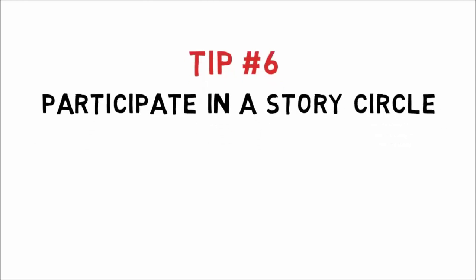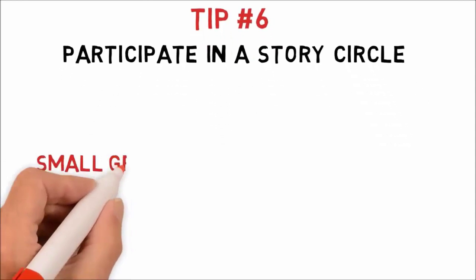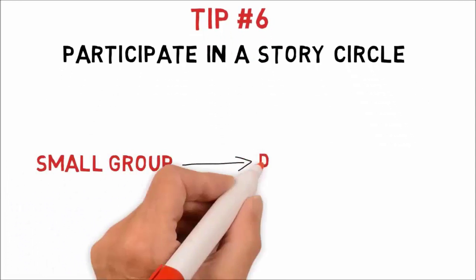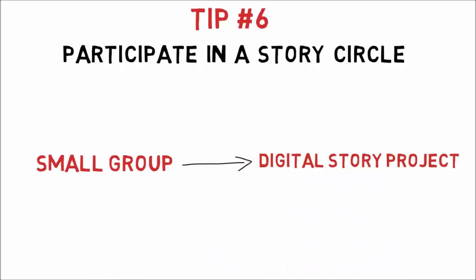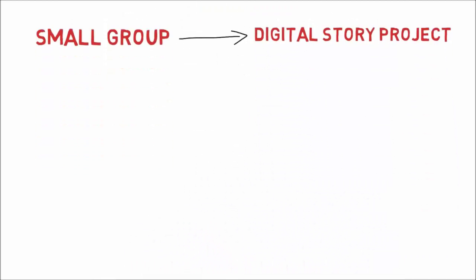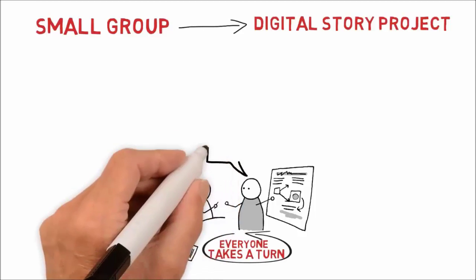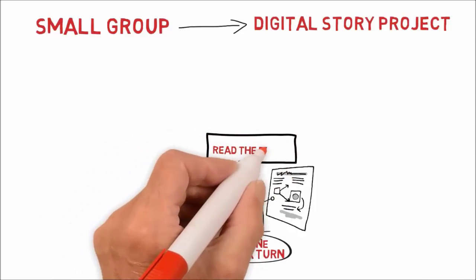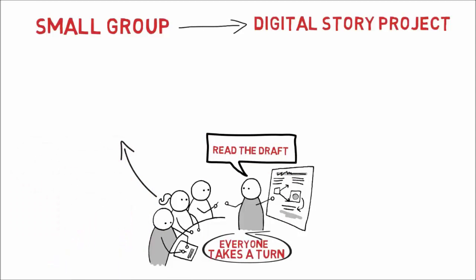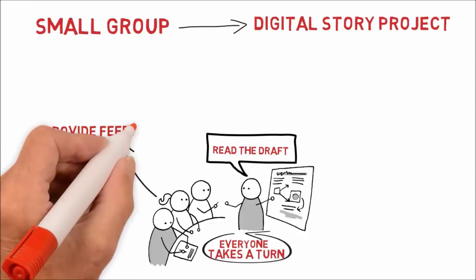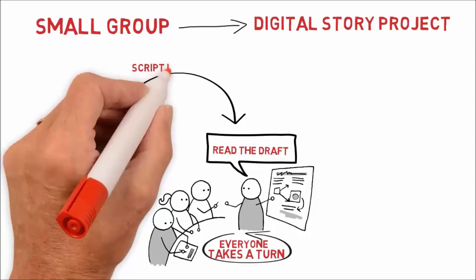Tip 6: Participate in a story circle. A story circle is a small group where you can share ideas and work through the process of making digital stories together with others, including perfecting your scripts. In the story circle, you and your colleagues can read aloud the draft versions of your scripts to each other and provide constructive criticism. You can then use these suggestions to improve your script.